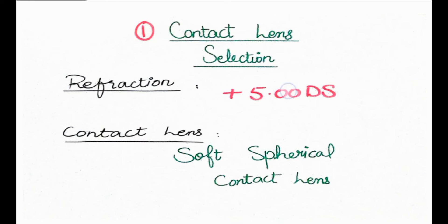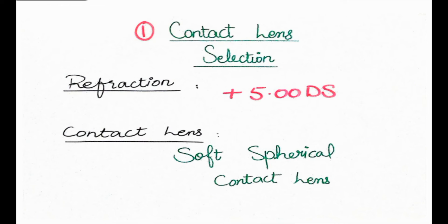To summarize the steps: first was patient selection, then the pre-fitting evaluation, and third is selecting the contact lens type - which is soft spherical contact lens. After selection, we need to give the patient trial contact lenses with different base curves, total diameters, and powers, then perform fitting assessment to determine whether the fit is optimal, steep, or flat. Before the fitting assessment, we must calculate the contact lens parameters.